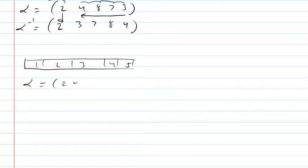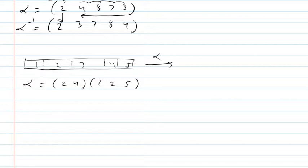Let's say (2, 4) then (1, 2, 5). So imagine I'm doing this alpha move. What happens is that first the two and the four change positions. So then it would be one, four, three, two, five — just the two and four swap.